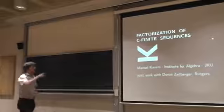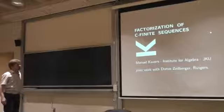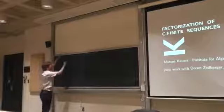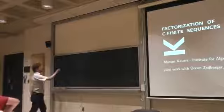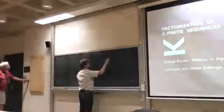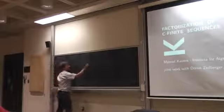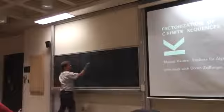So this is factorization of C-finite sequences. A sequence F_n is C-finite if it satisfies a recurrence. F_n, F_{n-1}, up to F_{n-17} equal to zero, meaning that some multiples of it are in a linear relation, and the coefficients here are constants. So that could be 7, 3, 5, and so on.